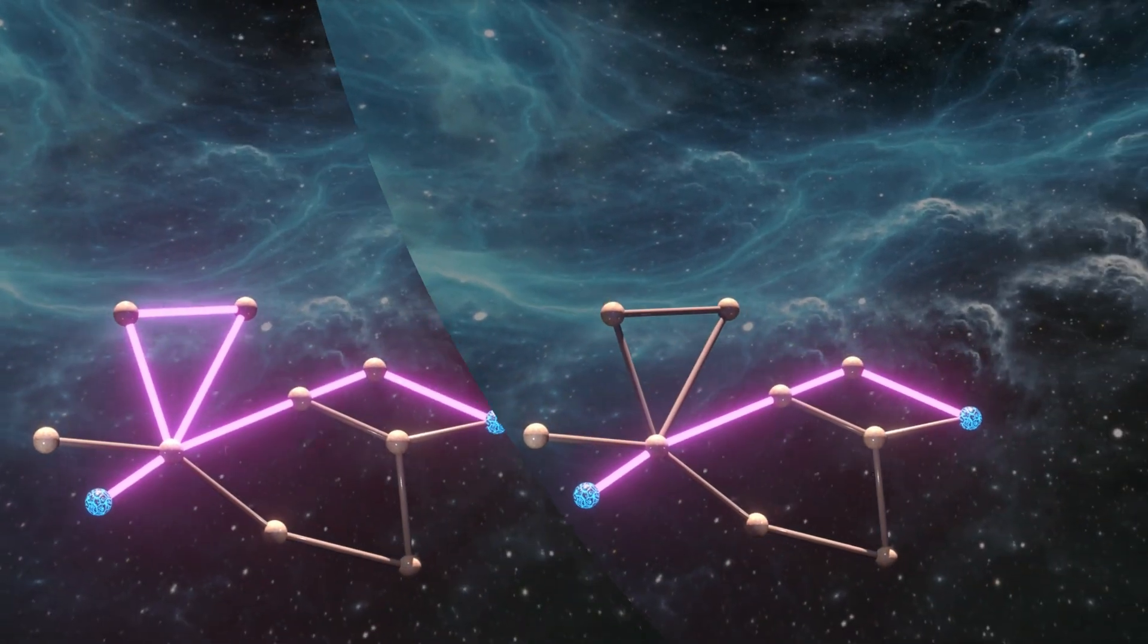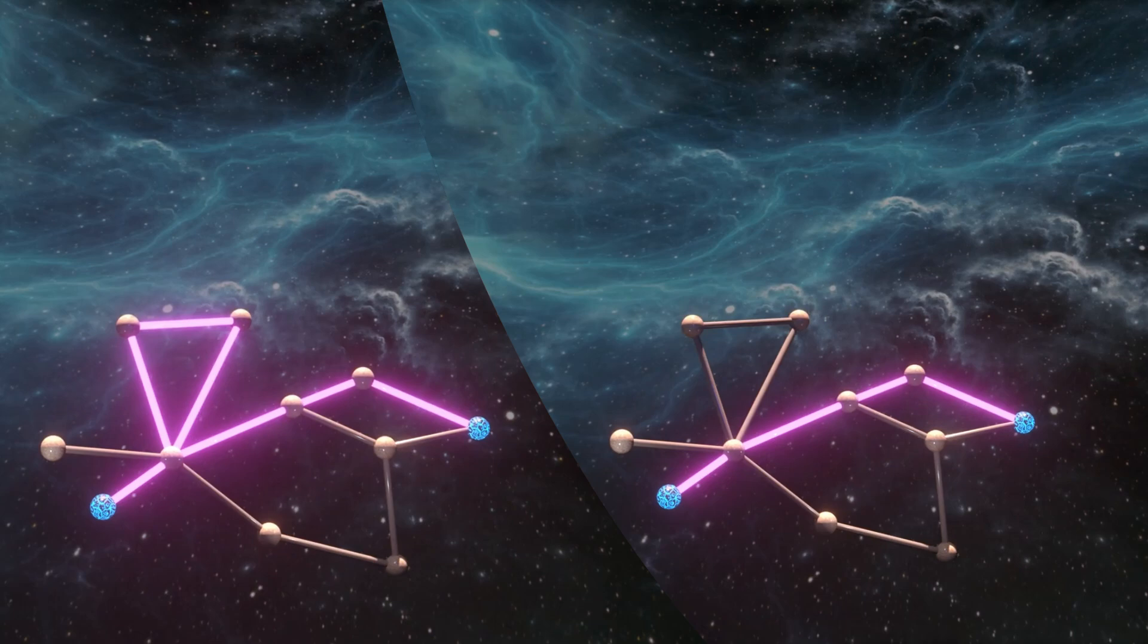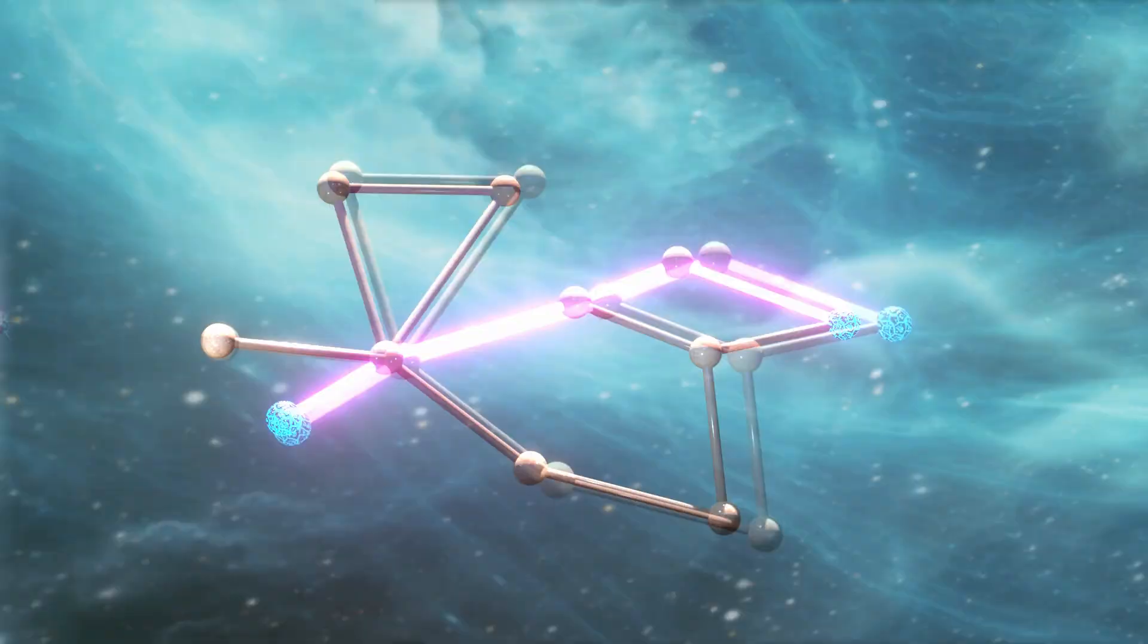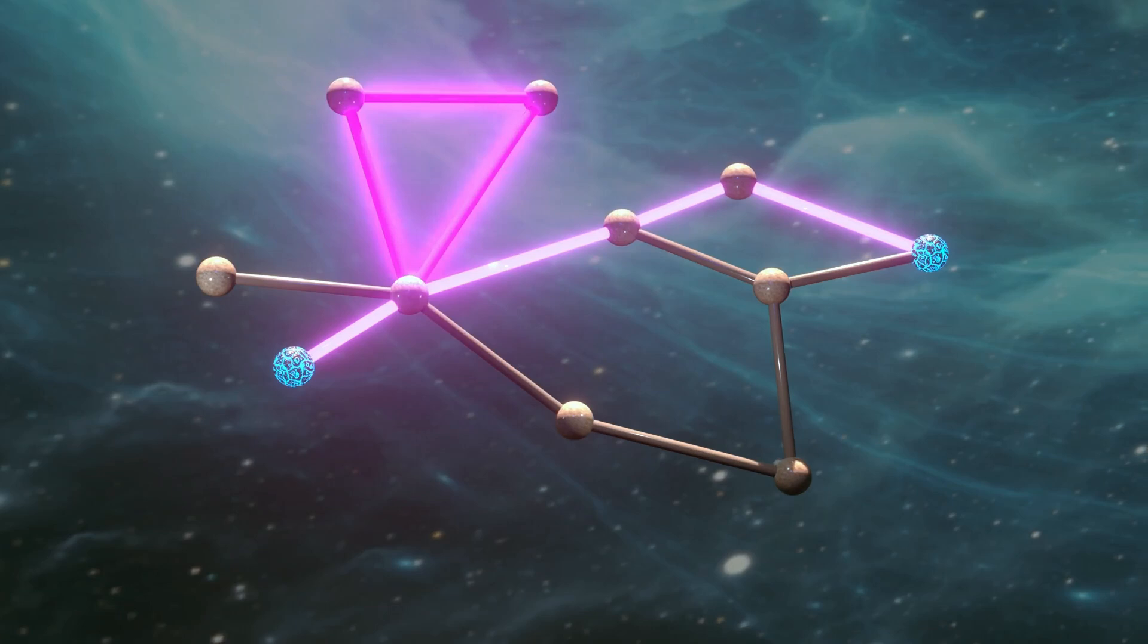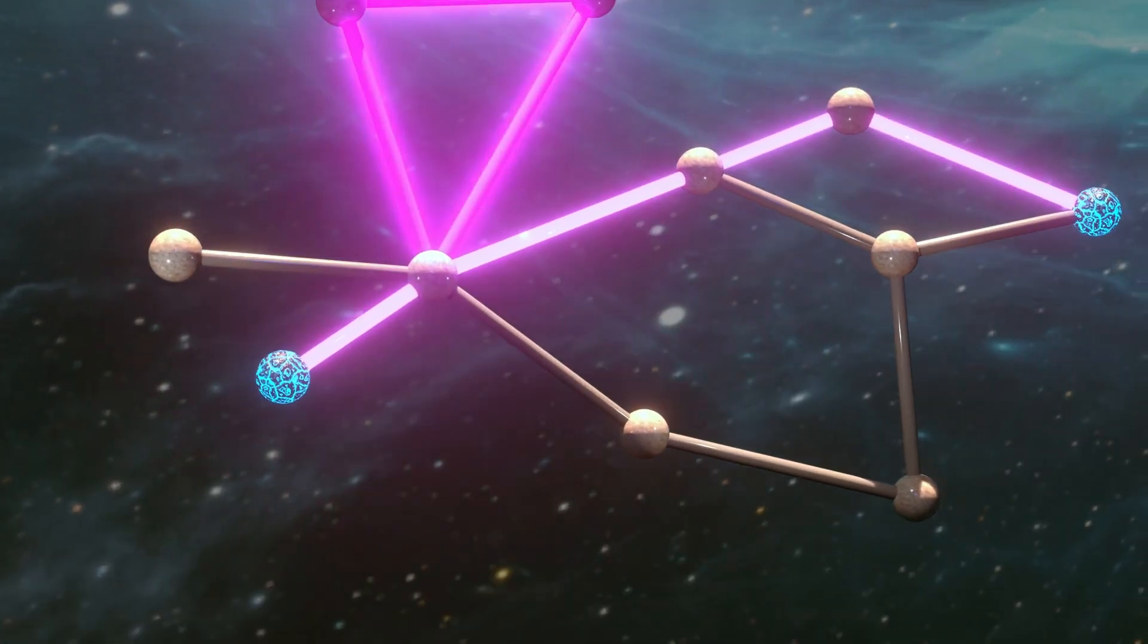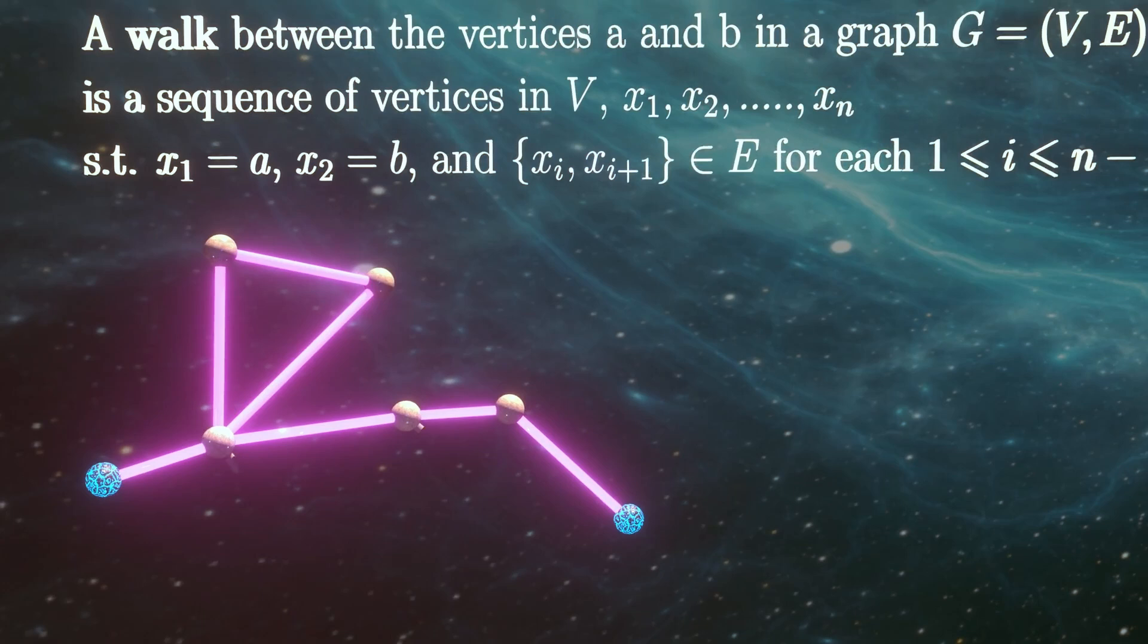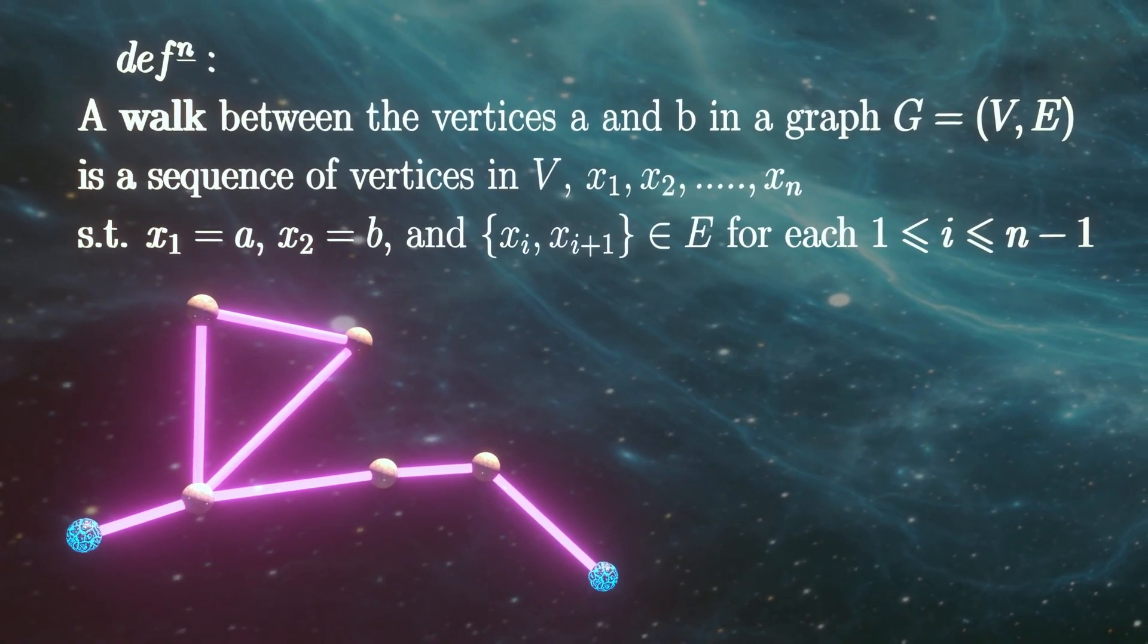But intuitively, you can see that whether or not we choose to include this loop on the path, it's not contributing any more to how well connected these two vertices are. And in practice, it just introduces more clutter and makes things difficult to work with. So we rule them out from the definition of paths, but we call a sequence like this with repeated vertices a walk between two points.